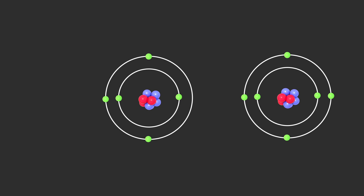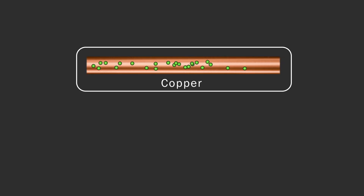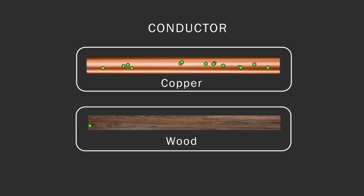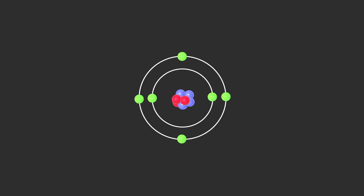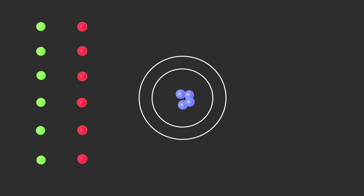Materials that allow many electrons to move freely are called conductors, and materials that allow few free electrons to move are called insulators. All matter is made up of atoms that have electric charges. For matter that has a balanced number of protons and electrons, positive charge force and negative charge force are balanced. This is called the neutral state of an atom.